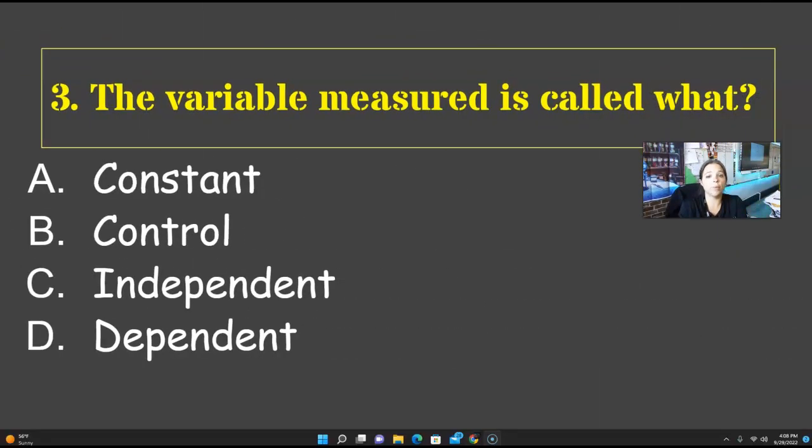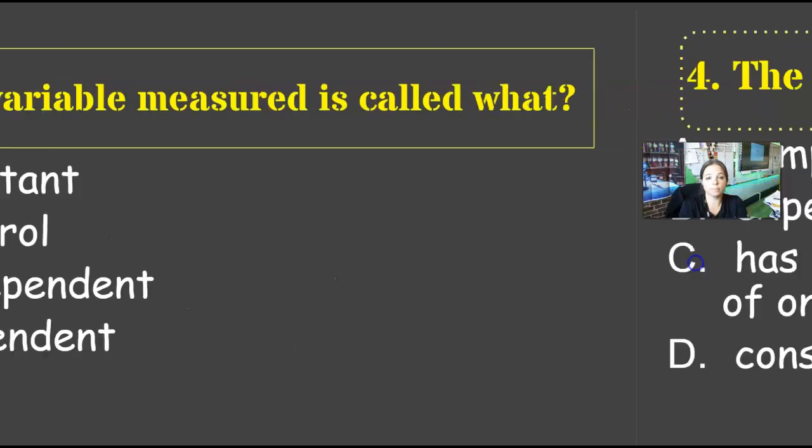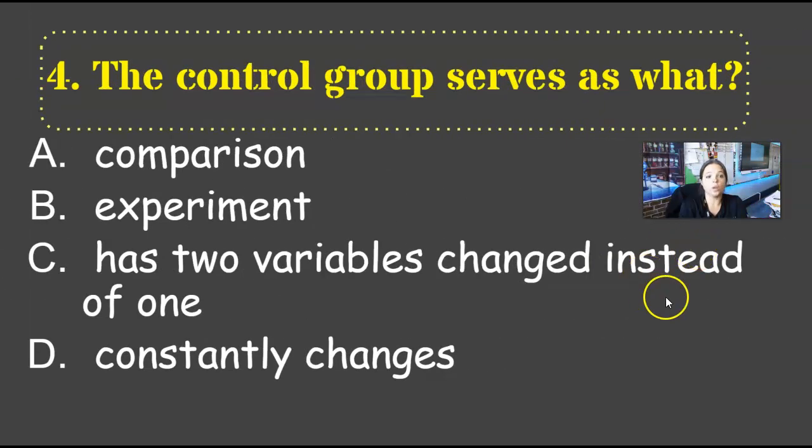The variable measured is called what? A constant, B controlled, C independent, or D dependent. Four. The control group serves as what? What's its purpose? A, comparison, B experiment, C has two variables changed instead of one, or D constantly changes. Pause if you need.